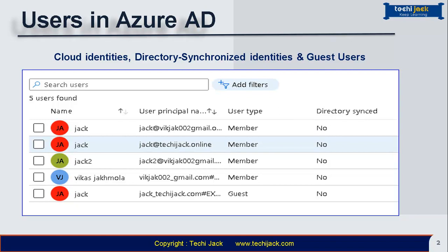Cloud identities are users that exist only in Azure AD — for example, administrator accounts and users you manage yourself. Their source is Azure Active Directory, or it might be an external Azure Active Directory if the user is defined in another Azure AD instance but needs access to subscription resources controlled by this directory. When these user accounts are removed from their primary directory, they are deleted.